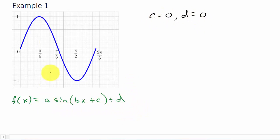Now, what about a? We can see the max value is one and the minimum value is negative one. So that tells us that a is equal to one. Now we have to figure out what b is.